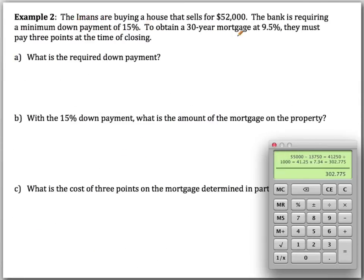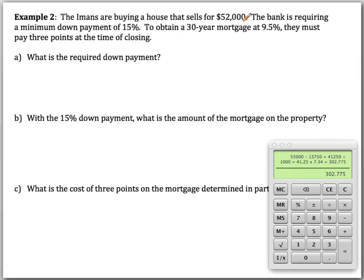In example two, the Imans are buying a house that sells for $52,000. The bank requires a minimum down payment of 15%. To obtain a 30-year mortgage at 9.5%, they must pay three points at closing. Go ahead and find the down payment and the mortgage on the property, then come back to check your work before we talk about finding the points.